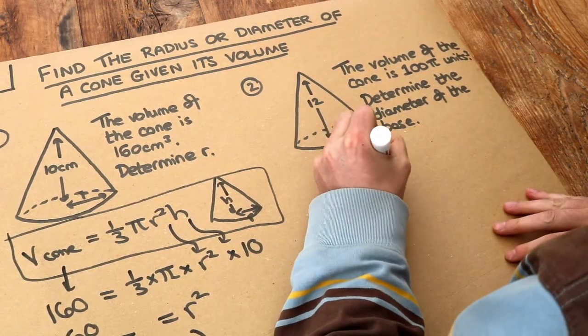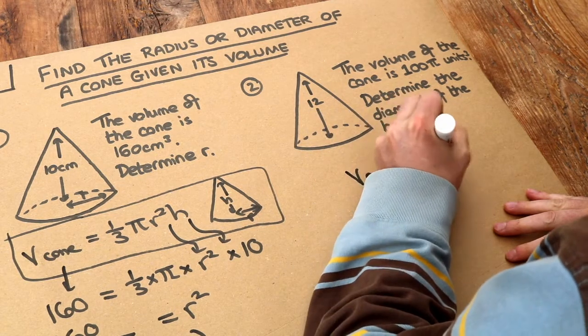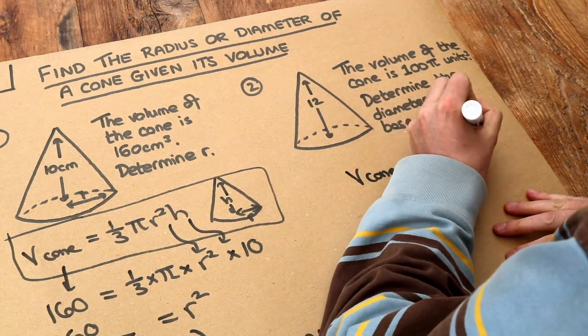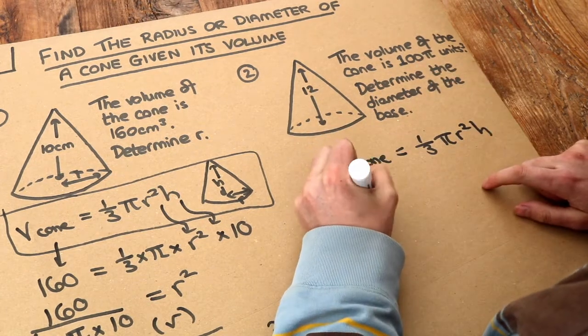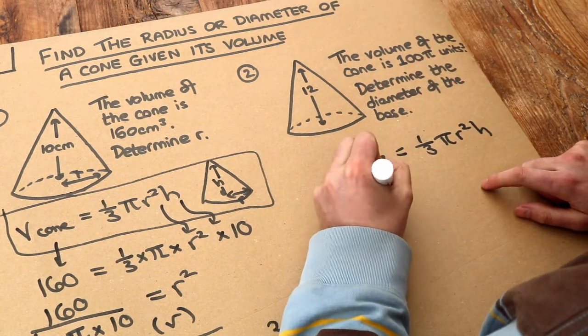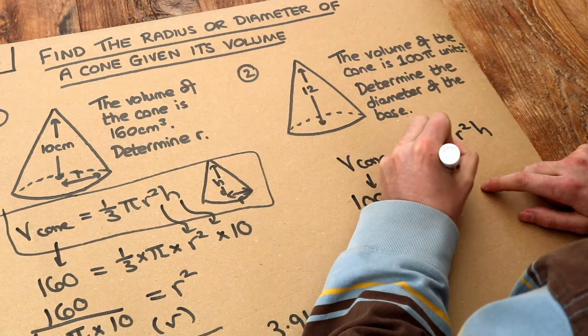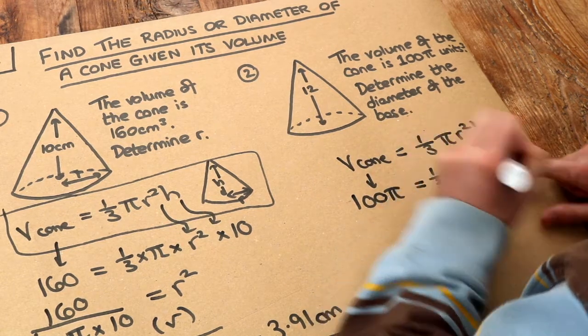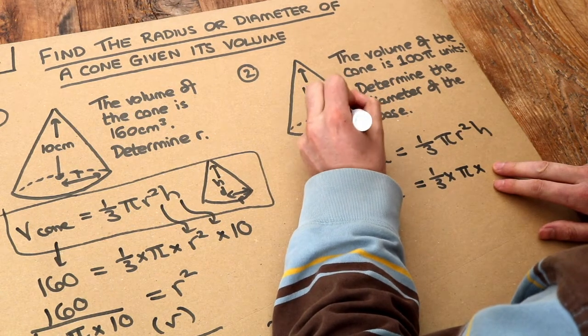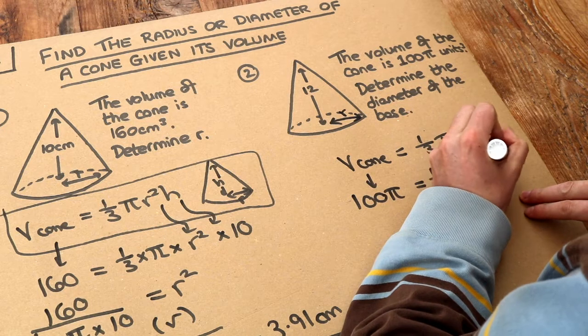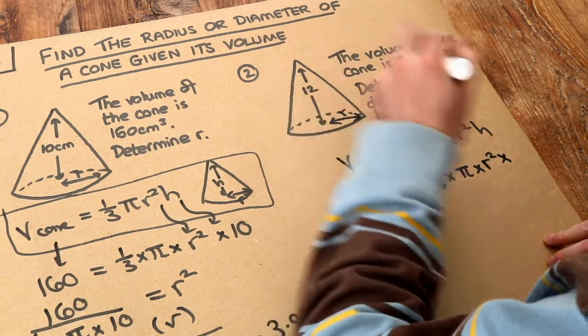Let's do the same as we did before. The volume of the cone is one third pi r squared h. Let's write out the formula and substitute into it. The volume we were given is 100 pi equals one third times pi multiplied by r squared. We don't know what the radius is so let's just call it r. r squared multiplied by the height, which is 12.